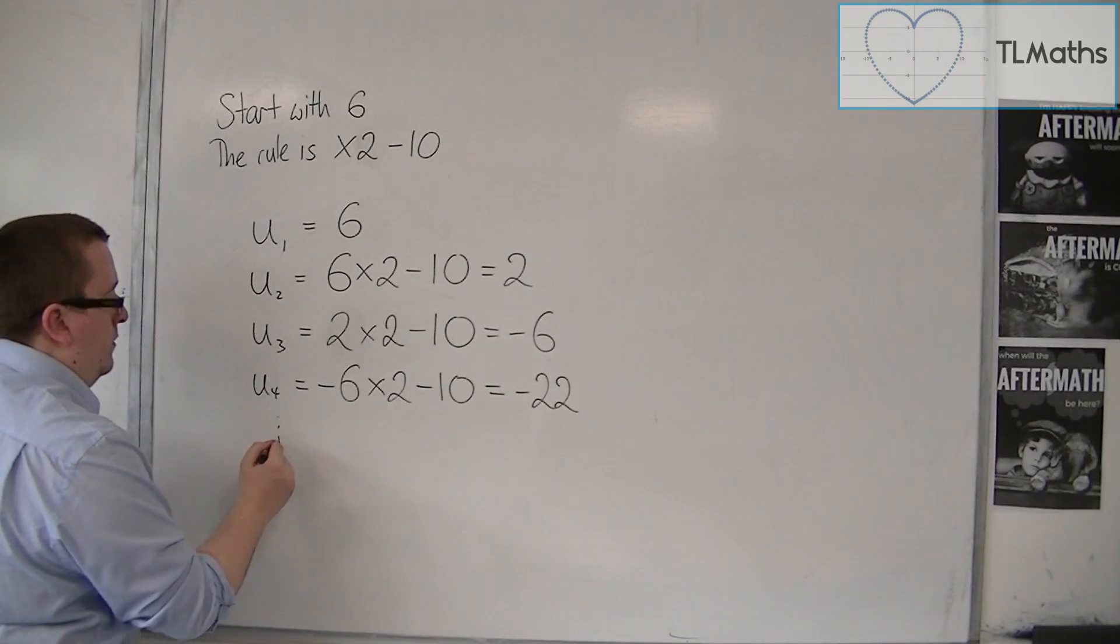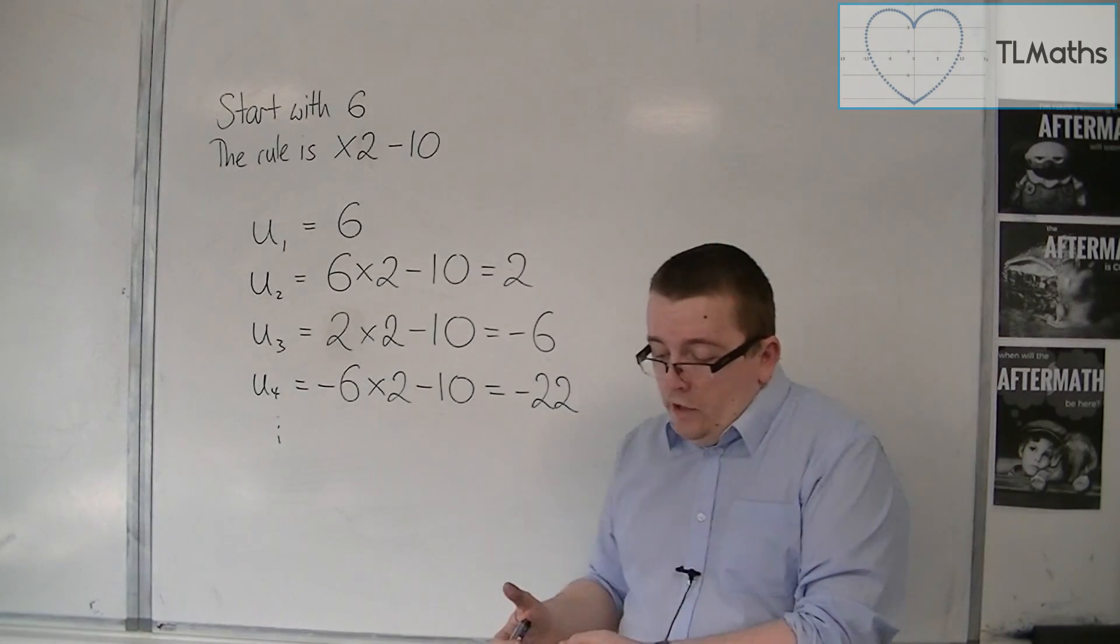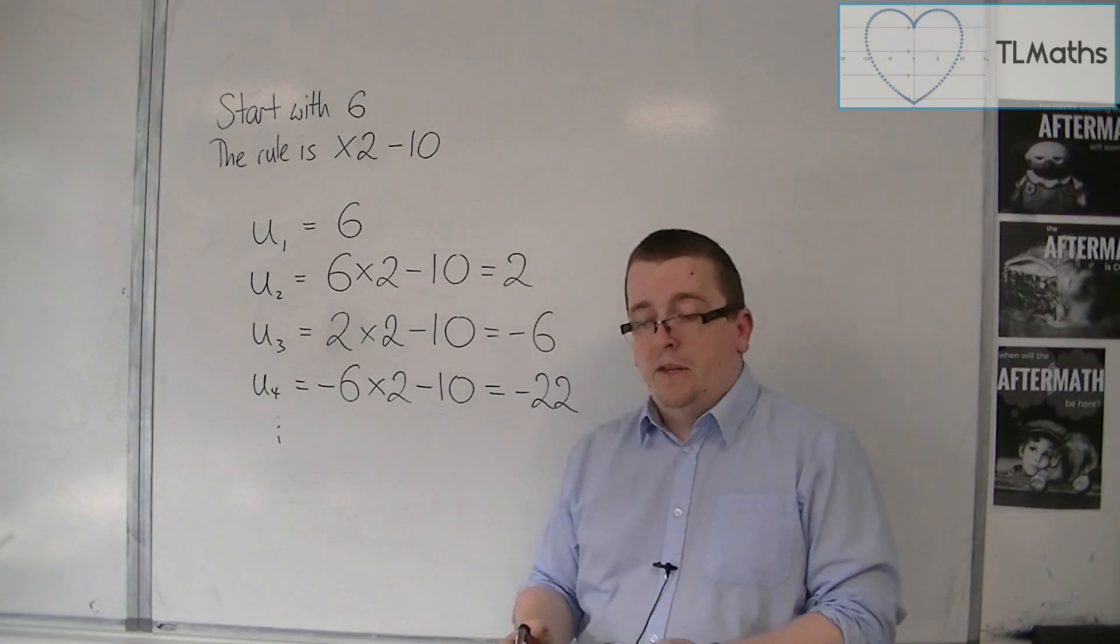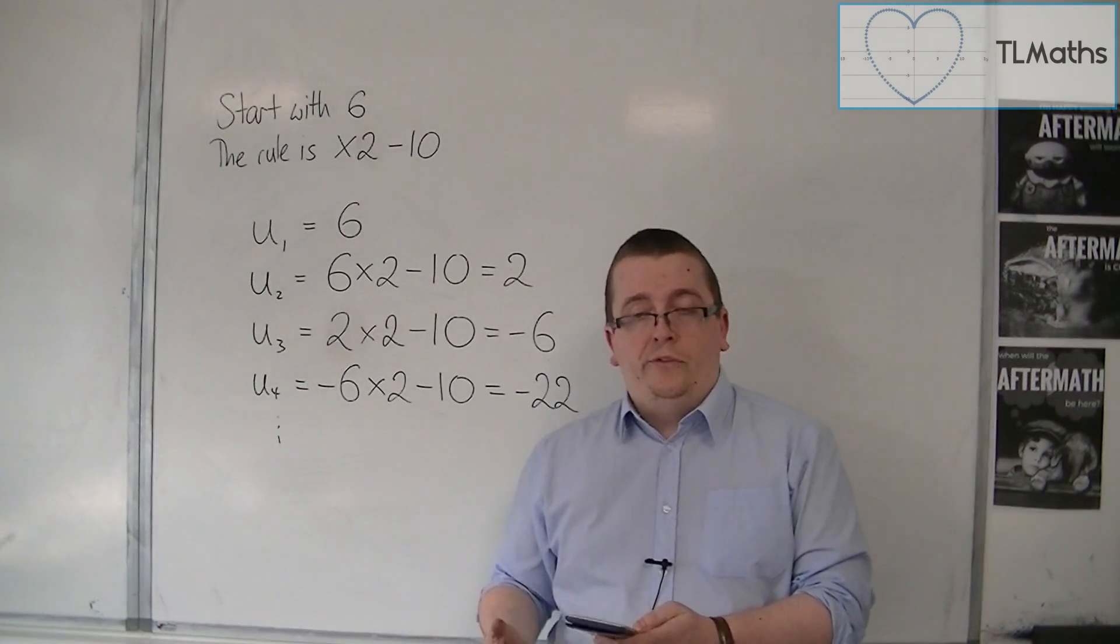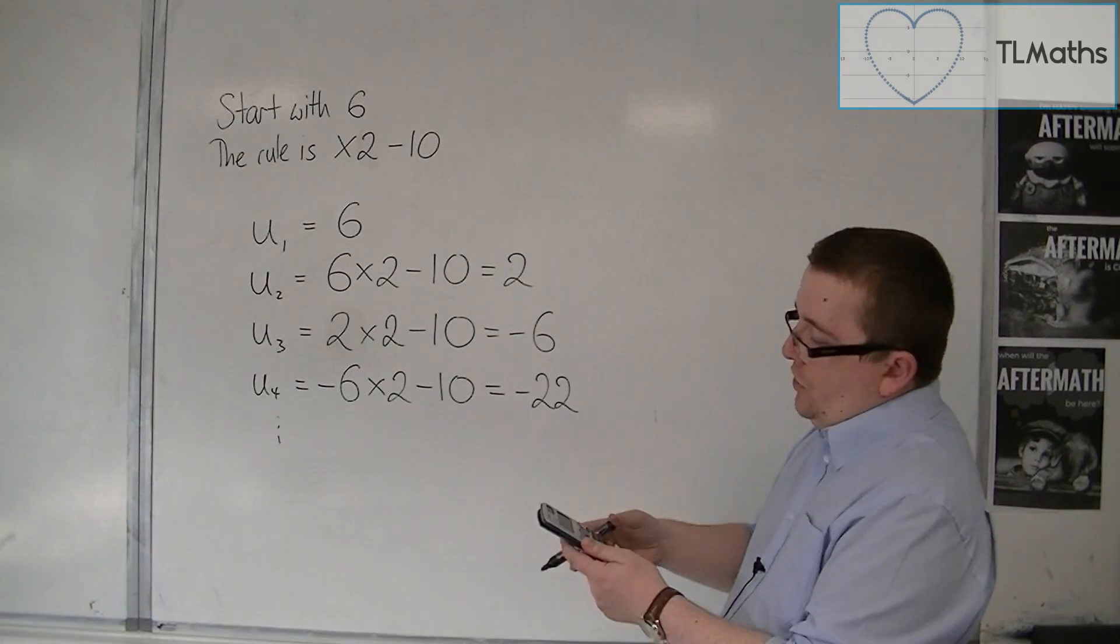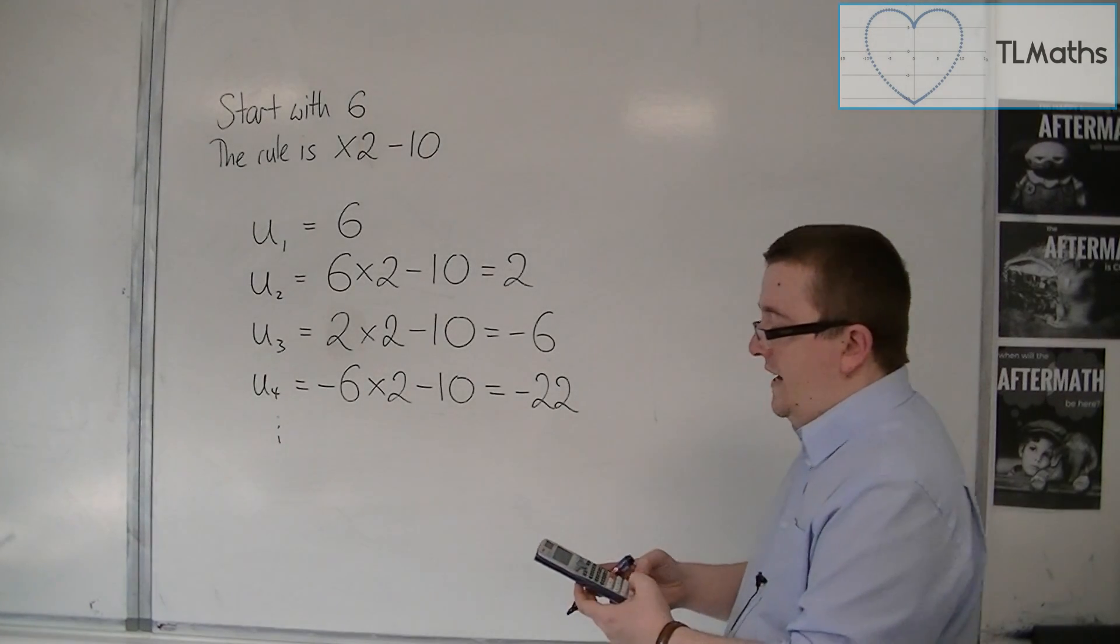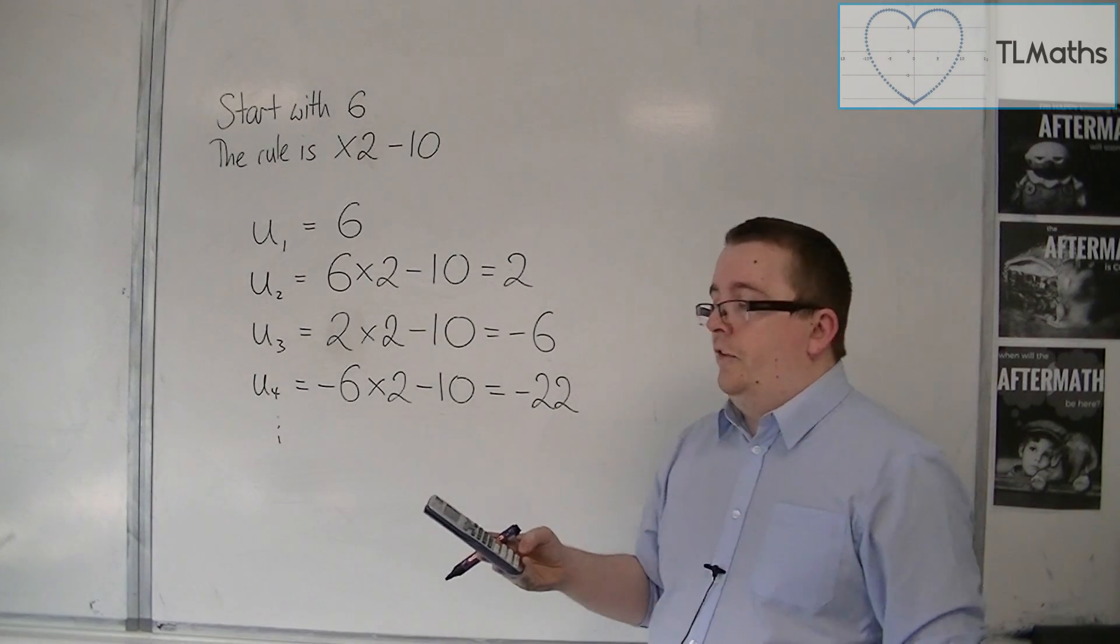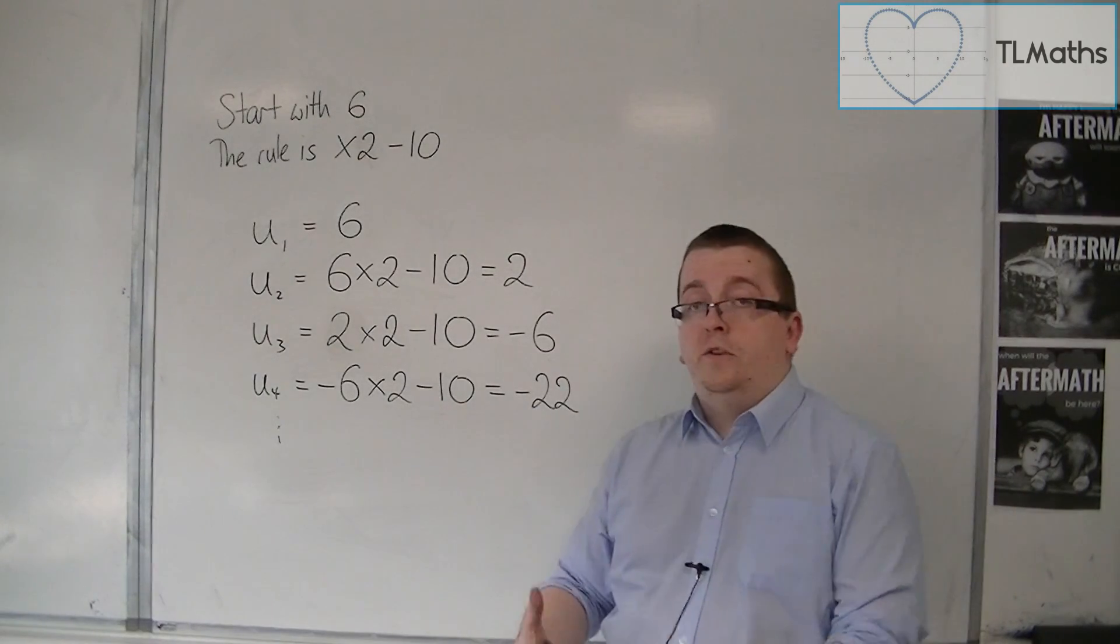And we could go on and on to find U_5, U_6, U_7, and so on. In fact, you can use your calculator to generate this sequence very quickly. If you just type 6, the starting number, and press equals, that puts it into the calculator's memory. Then you do times by 2, so you should see answer times 2, take away 10, and then you can keep pressing equals, and you will see the sequence generated on your calculator. That will enable you to do it very quickly.